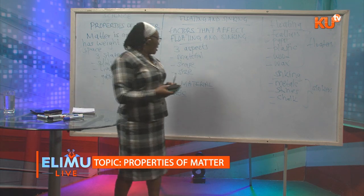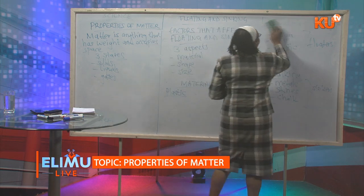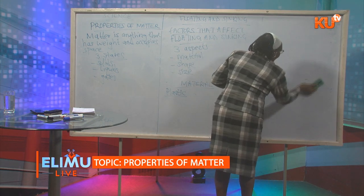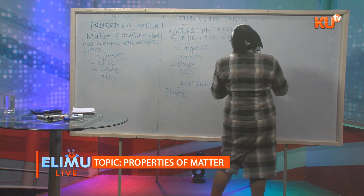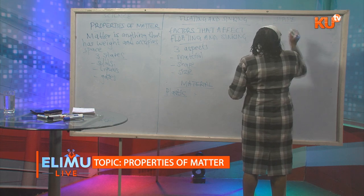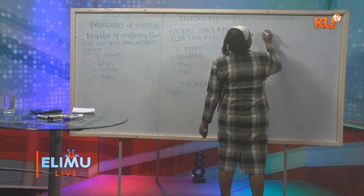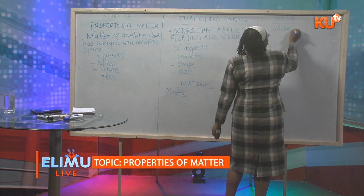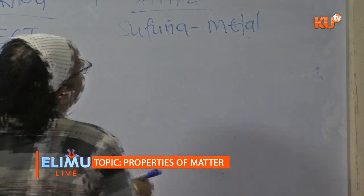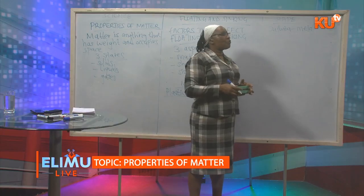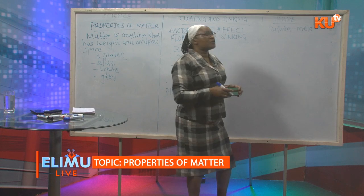The next thing we look at is shape — the shape of objects. We take an item made of metal, for example a sufuria. A sufuria is made of metal and it may be heavy. If you put it on water, the sufuria will float because of its shape.